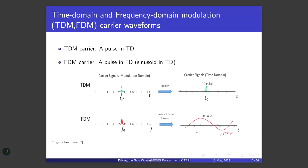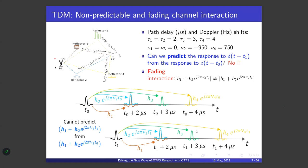In TDM the information carrier is a pulse in the time domain. In FDM the information is carried by frequency-domain pulses — e.g., a frequency-domain pulse at f₀, which in the time domain is a sinusoid. To go from frequency to time domain we use the inverse Fourier transform. Now we'll examine what happens with TDM using our channel example, with delays in microseconds and Doppler values in Hz.